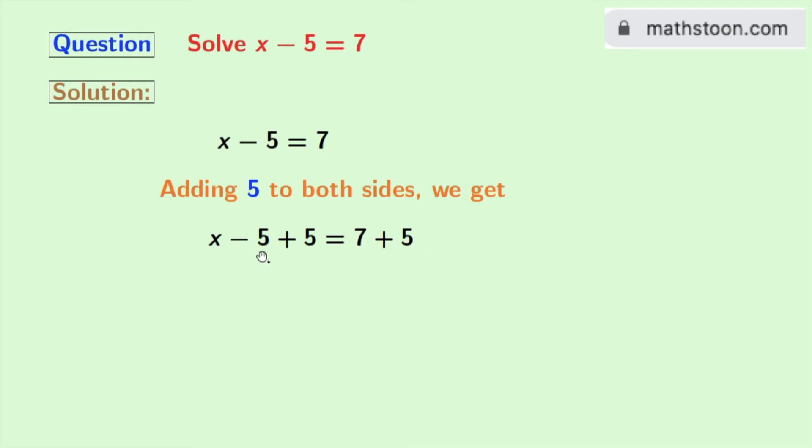Look, in the left hand side we have minus 5 plus 5, which is 0, so we are left with x. And in the right hand side we have 7 plus 5, which is 12. So finally we get x is equal to 12, and this comes out as our final answer.